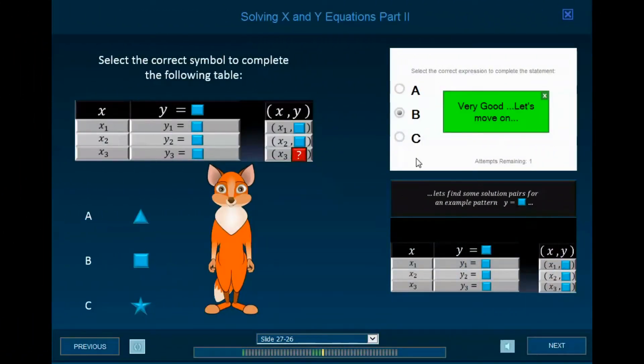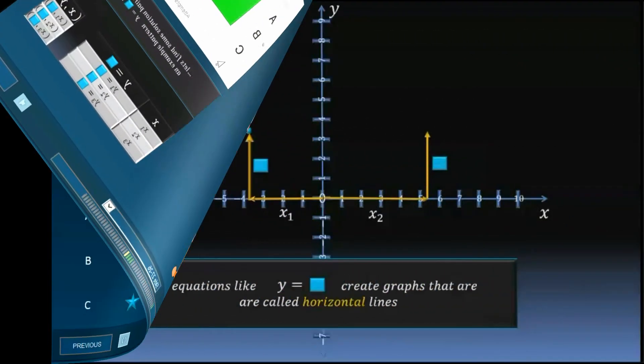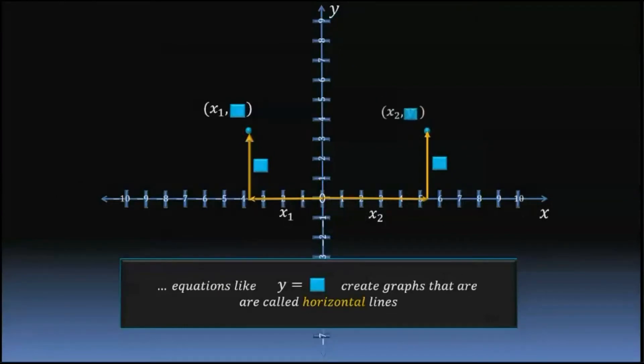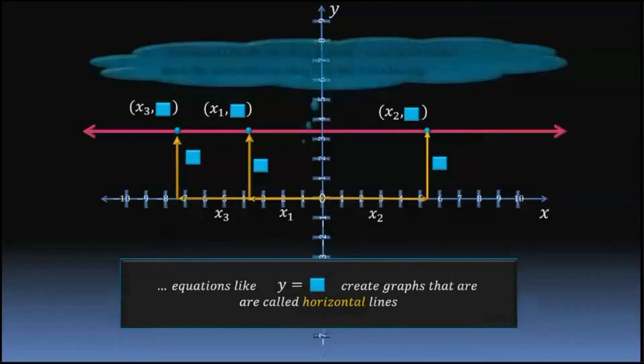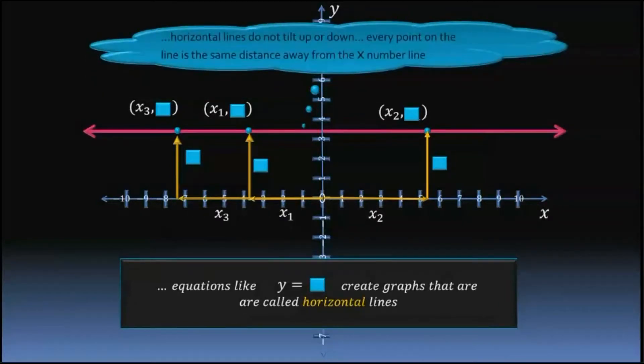You're right. The correct symbol to complete the following table is answer choice b, the square. Create graphs that are called horizontal lines. Horizontal lines do not tilt up or down. Every point on the line is the same distance away from the x number line.